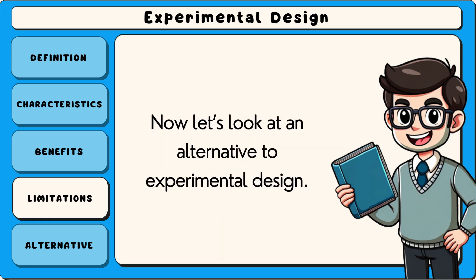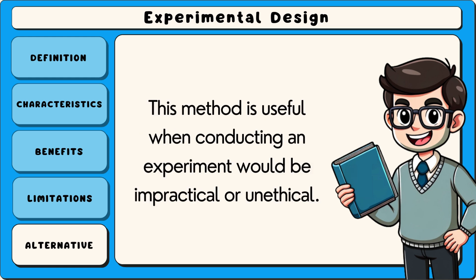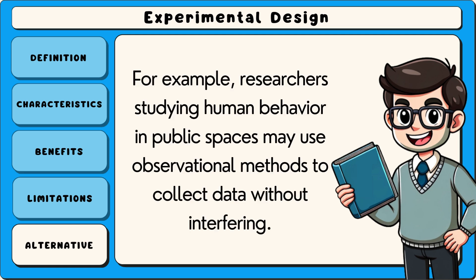Now let's look at an alternative to experimental design. An alternative to experimental design is observational research, which involves studying subjects in their natural environment without manipulating any variables. This method is useful when conducting an experiment would be impractical or unethical. For example, researchers studying human behaviour in public spaces may use observational methods to collect data without interfering.